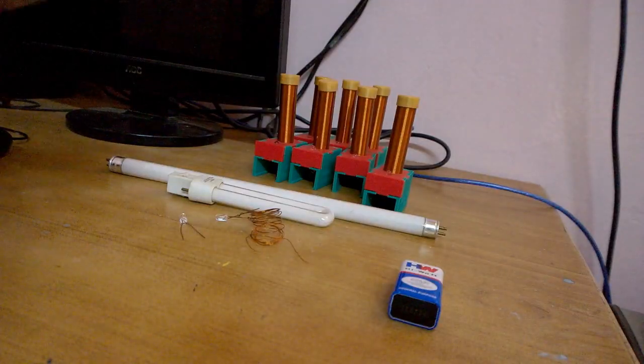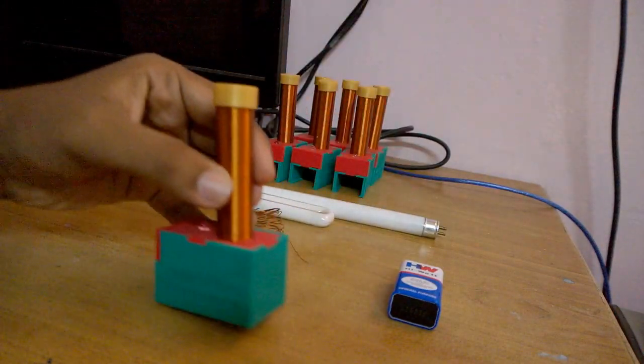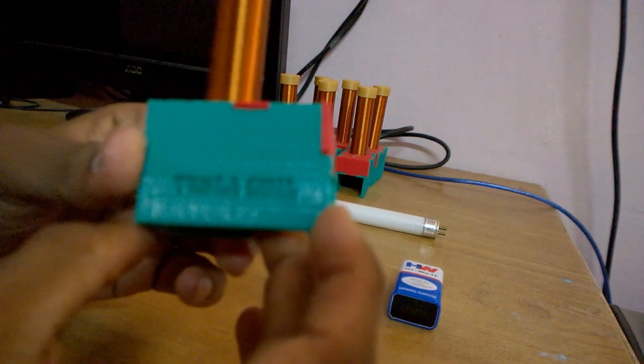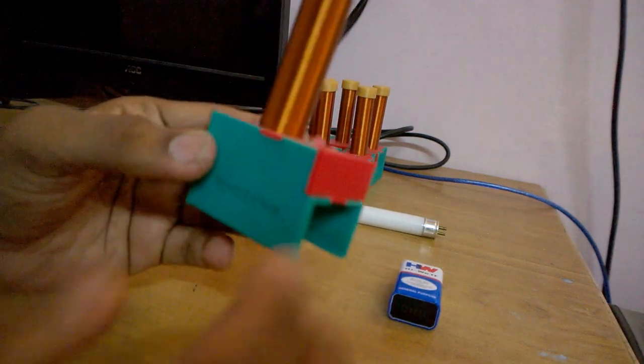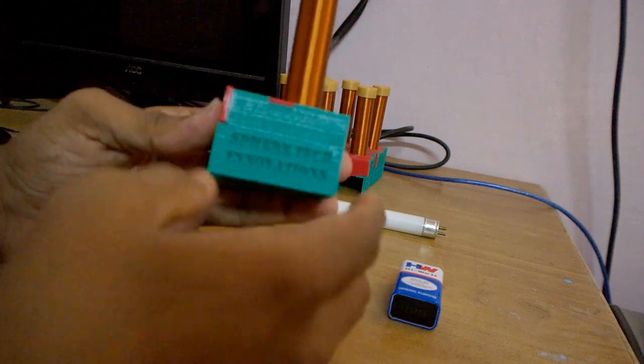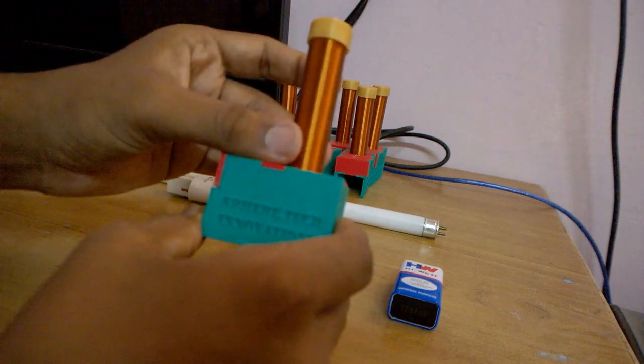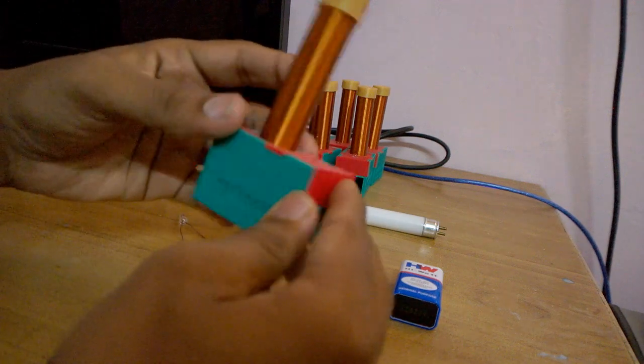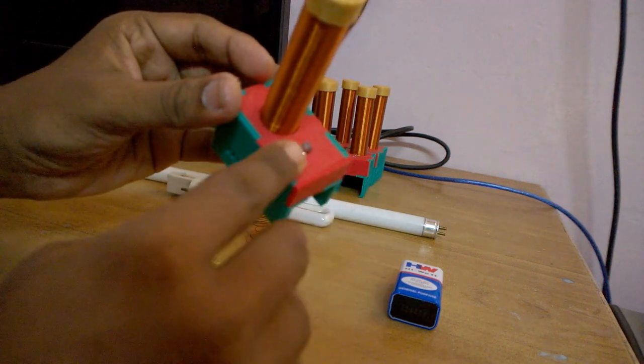Now we are going to see the working of the model. This is a mini Tesla coil. The case is fully 3D printed. This is a secondary coil and this is a top load - T denotes Tesla. And this is the light for indication.